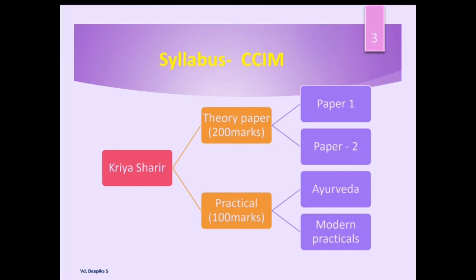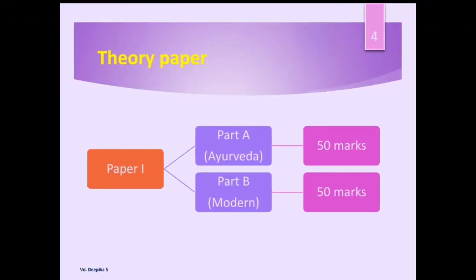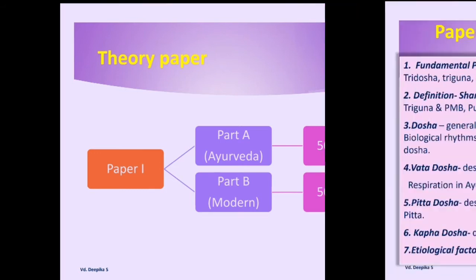Coming to the theory paper, it has two papers — Paper 1 and Paper 2. Under Paper 1, there are two subdivisions: Part A and Part B. Part A is the Ayurveda portion and Part B is the modern portion. Part A Ayurveda portion is for 50 marks and Part B modern portion is for 50 marks. Now we will see what topics are covered under Part A, that is the Ayurveda portions.